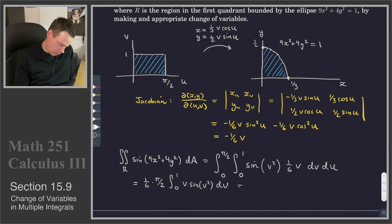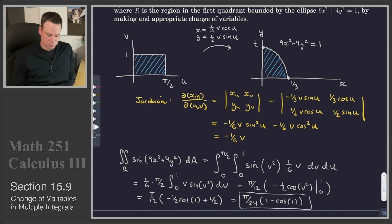And now we can use a substitution on that inner integral. So this is π/12. That inner integral, that's -1/2 cos(v²) is the antiderivative, and that goes from 0 to 1. And so this becomes then π/12. Plugging 1 in gives us -1/2 cos(1), and then minus minus 1/2 cos(0), so that's +1/2. So that's π/24 times (1 - cos(1)).